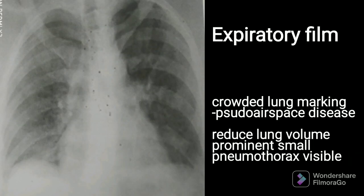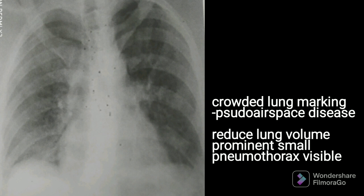In an expiratory film, crowded lung markings are seen because it is taken in expiration — less air is present inside the lungs. So crowded lung markings may mimic a pseudo airspace disease. There is also a benefit to this expiratory film: one use is in pneumothorax, because the reduced lung volume in expiration can more easily show a small pneumothorax.